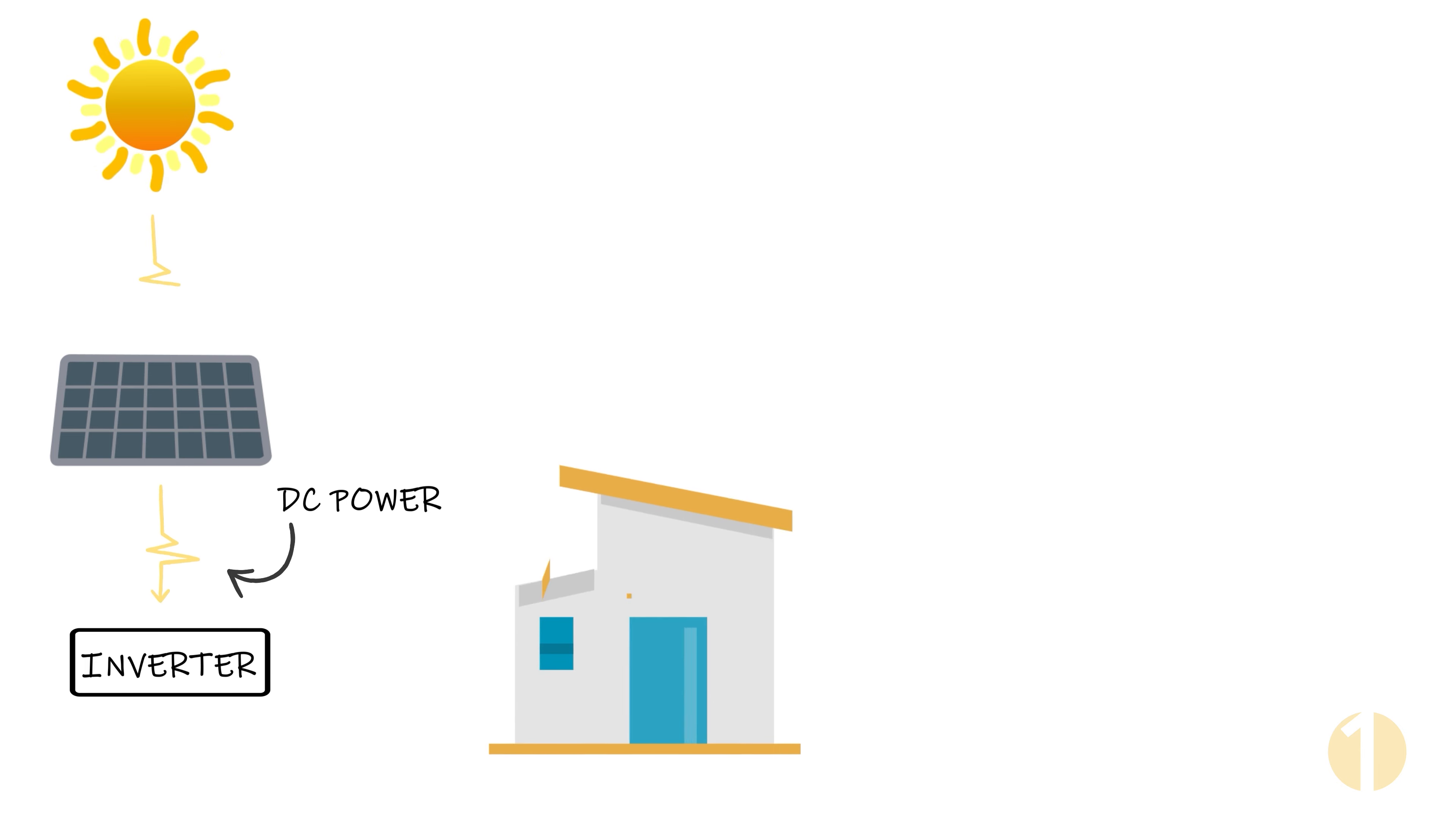Then, the inverter that was installed converts that power from DC, or direct current, to AC, alternating current, so that you can use it in your house because our houses can't use DC power.